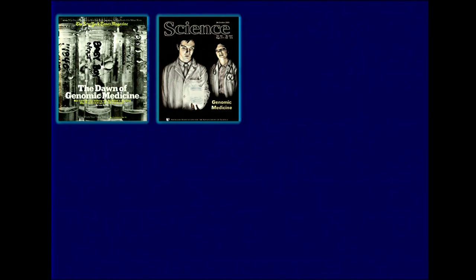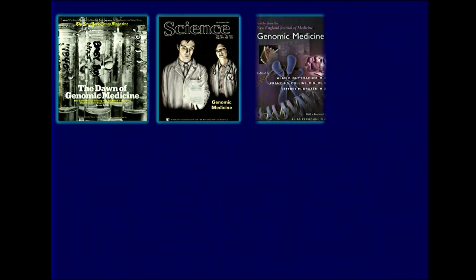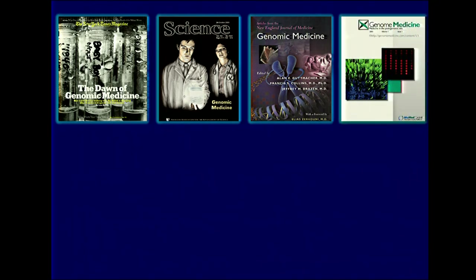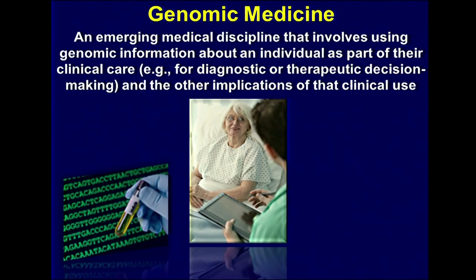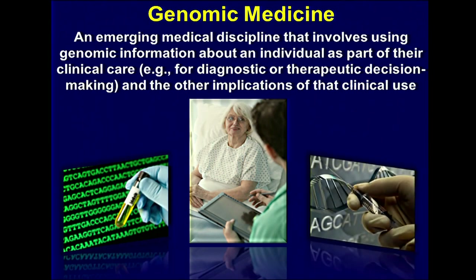Whether you saw it in the popular press, such as the New York Times, or the scientific press, such as Science Magazine, terms like 'genomic medicine' started to come to the fore. There were entire series of major journals dedicated to articles in genomic medicine, entire journals established such as Genome Medicine, and major textbooks created around genomic medicine or personalized medicine. The term I tend to use, and that NHGRI uses, is 'genomic medicine' — largely synonymous with individualized medicine, precision medicine, and personalized medicine.